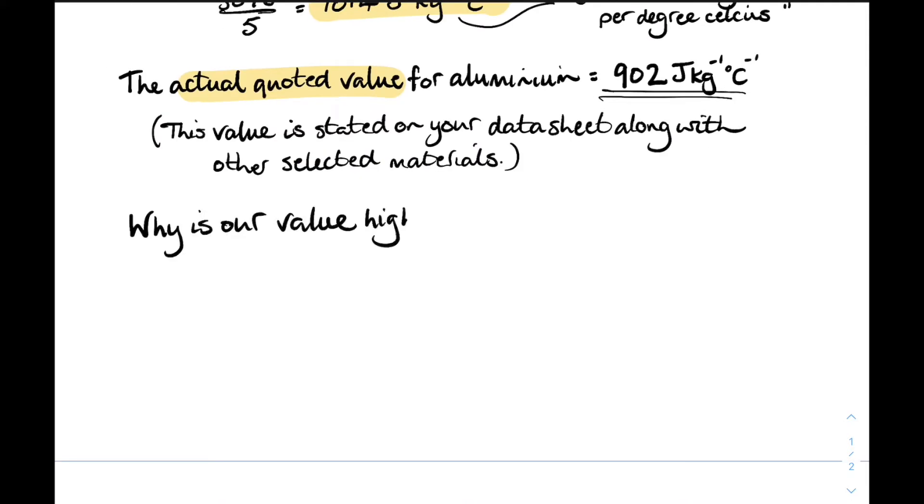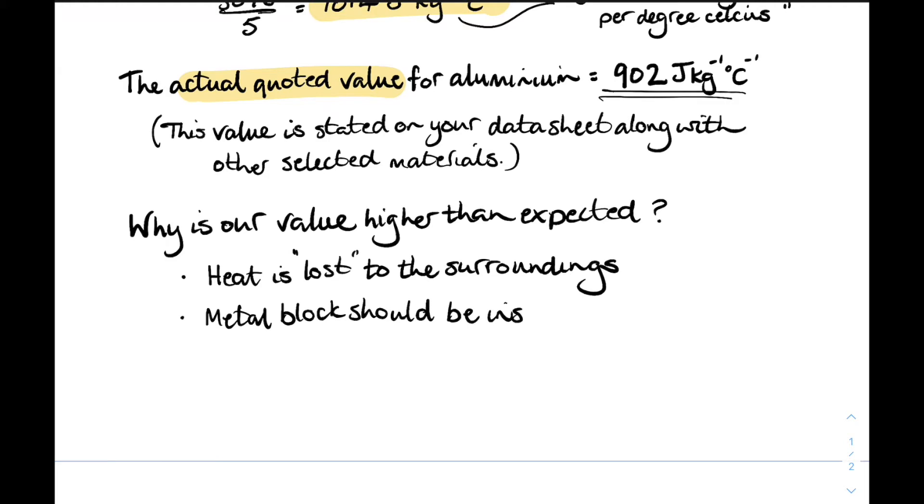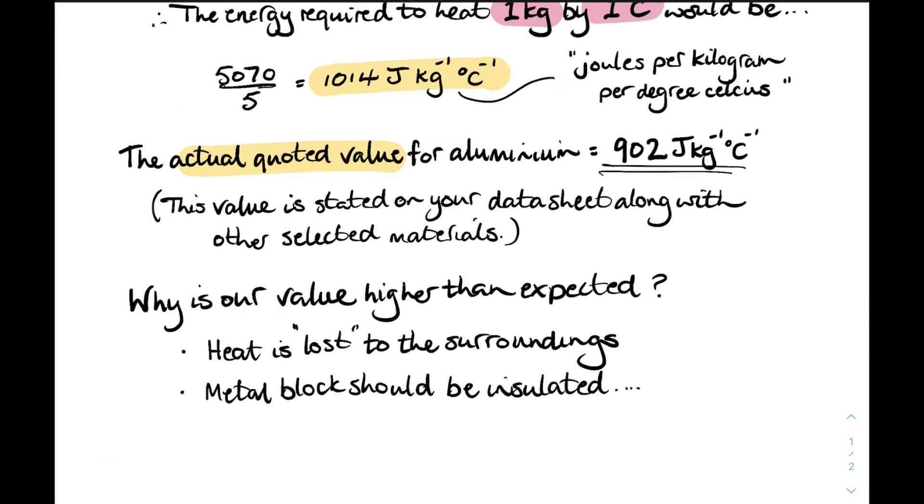Why was our value too high? Well, heat was lost to the surroundings. It was escaping out the sides of the metal block. What we should have done really was insulate the metal block to stop any heat loss.